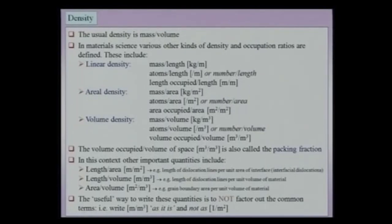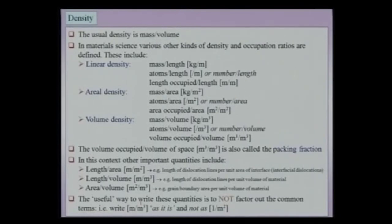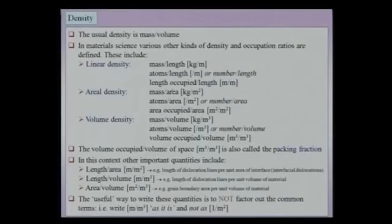Apart from linear density, you could have areal density. Even within linear density we have various units: kg/m, number per unit length (per meter), or meter per meter (dimensionless). The useful way to write these quantities is not to factor out common terms — write it as meter per meter cube, not as per meter square, because this is more physically instructive of the kind of quantities you are dealing with.